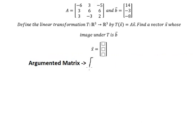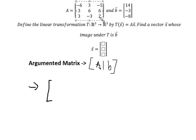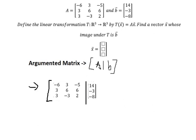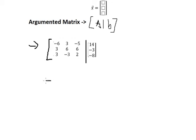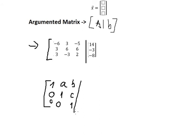We have matrix A with vector B. We need to put the values of matrix A in here with vector B on the right side, to set up the augmented matrix. We need to find the values of the matrix, which should look like this.